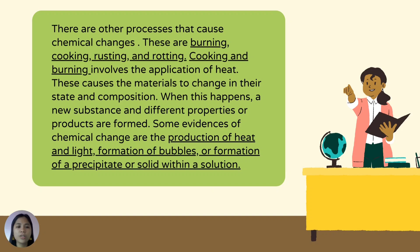There are other processes that cause chemical changes: burning, cooking, rusting, and rotting. Cooking and burning involve the application of heat, causing materials to change in their state and composition. When this happens, a new substance with different properties is formed. Some evidences of chemical change are the production of heat and light, formation of bubbles, or formation of a precipitate within a solution. Materials also undergo chemical change when exposed to oxygen or when heat is applied.